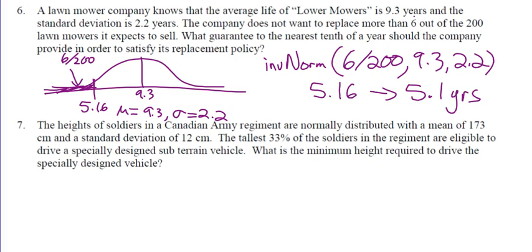We check: if we go to 5.2 years, the area gets larger so we'd replace more than 6. Therefore we go to 5.1 years. We could verify using normal CDF from negative 1E99 to 5.1 or 5.2 to see the exact percent — that's an extension question. In practice, manufacturers likely round to a 5-year warranty, replacing even fewer.